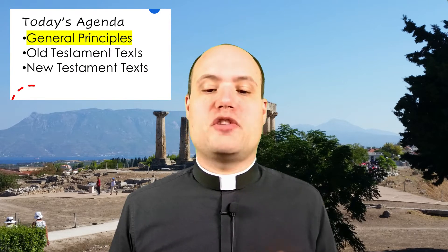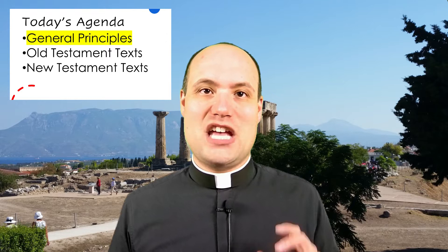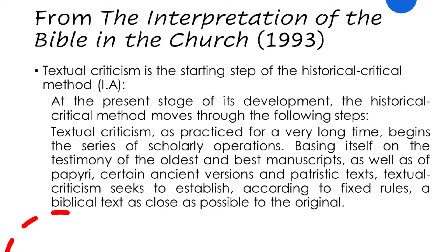Textual criticism, first and foremost, is the first operation of the historical critical method — it's the beginning of this method. As we learned in our last class, the historical critical method is a diachronic method that looks at how the text evolved over time. In textual criticism, we're looking at what the original wording likely was given how it's been transmitted through many different manuscripts.